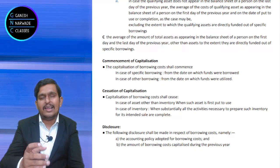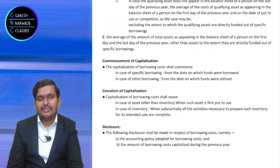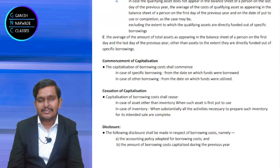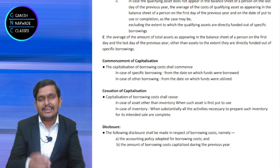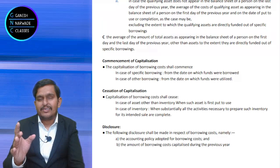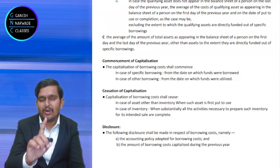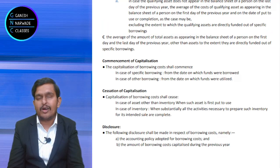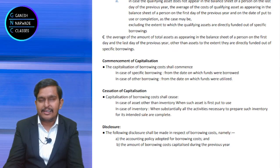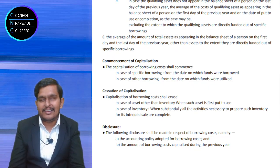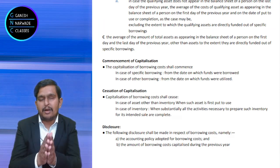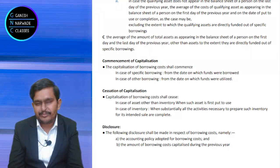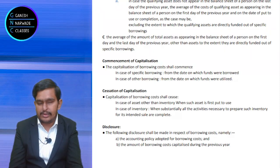When does capitalization end — the cessation? In relation to all assets other than inventory, capitalization ends when such assets are first put to use. After that point, the borrowing cost previously capitalized is added to actual cost under Section 43(1), and any interest after cessation is revenue expenditure under Section 36. For inventory, the capitalization period ends when the inventory reasonably comes to a position where it is in a saleable condition — ready to be sold.